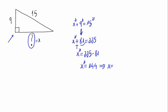X would be the positive square root, as it is a length. The square root of 144 equals 12.